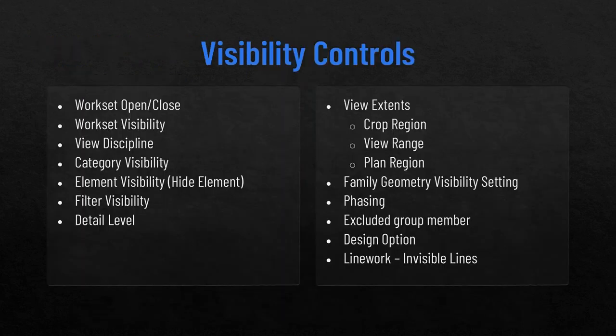I've seen projects with hundreds of filters per view — try to keep it simple, start at the bottom, work your way up. Next up we have visibility controls. When it comes to visibility, there's not really a hierarchy — if there's one control turning visibility off, it's going to be off. There's not a control that's going to override it to turn it back on.